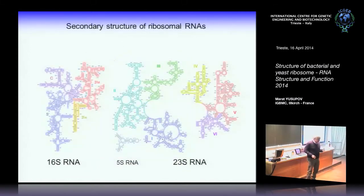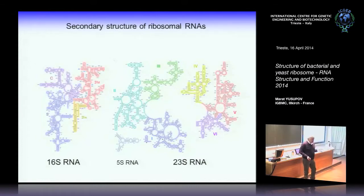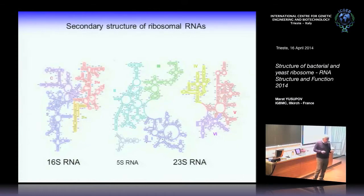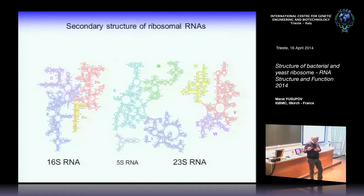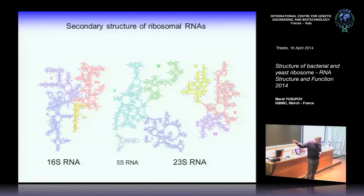One more revolutionary step was done by Harry Noller and a group in Strasbourg led by Jean-Pierre Ebel's laboratory: they solved the sequence of both ribosomal RNAs and predicted their secondary structure. The prediction was so accurate that we still use that data obtained 30 years ago.